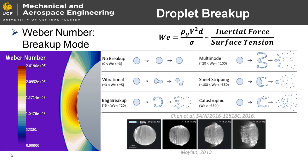The breakup of droplets can be classified by a range of Weber numbers, which evaluates the inertial force encountered by the droplet in comparison to the fluid surface tension. General forms classified by experimental results in Moylan are seen. To the left is a CFD analysis of Weber number near a leading edge in Mach 6 flow. For these hypersonic speeds, the higher form of sheet stripping is expected near droplet demise. Outer layers of the droplet are directly sheared away by the high local inertia forces and dispersed as mist behind the main droplet mass. This is indicative to a droplet lifespan with respect to the impact time of the droplet to the vehicle.